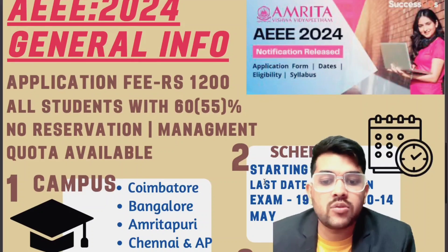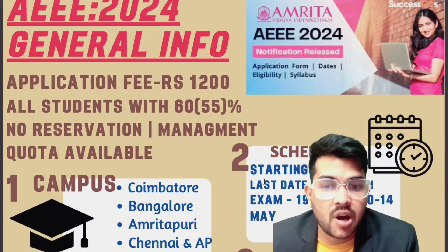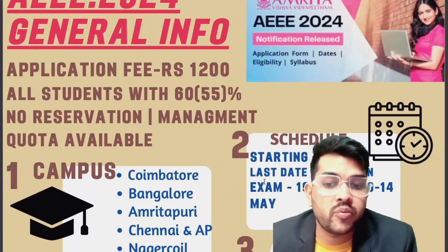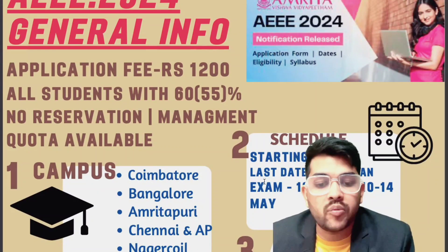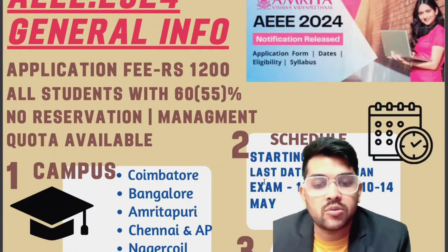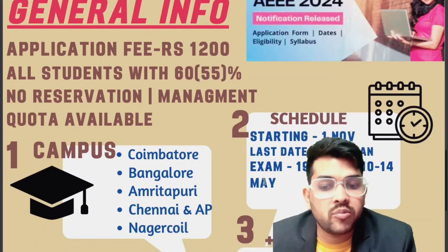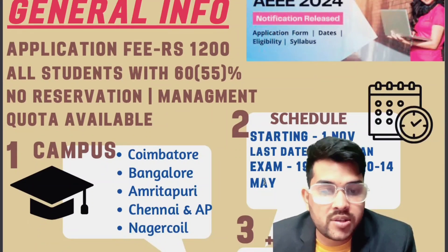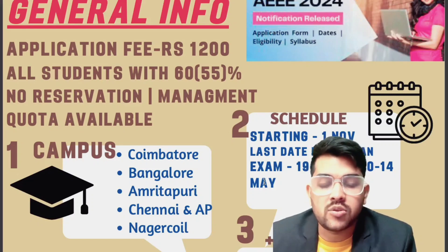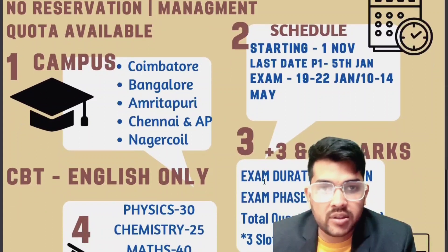Regarding the schedule: applications started from 1st November. The last date is 5th January for Phase 1. For Phase 2, the application will start after the first attempt - there is no information as of now. The exam date for the first attempt is 19th to 22nd January, and the second attempt is 10th to 14th May.